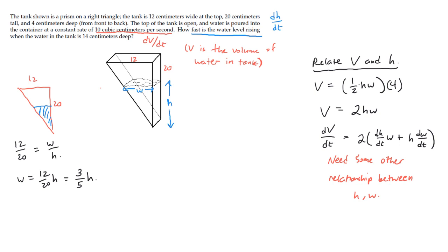And at this point, we get to make a choice. We can either use this to get a relationship between dw/dt and dh/dt, and therefore replace both this and this w and dw/dt in this equation with things that are in terms of h. Or we can go back to here, and this is actually what I'm going to do, is we can go back to here and replace w with 3/5ths h so that we just have a relationship directly between V and h.